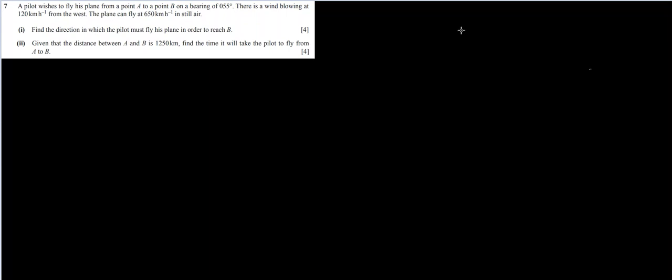So let's try to visualize what they are trying to say. 55 bearing will be somewhere say here. So this is A, this is B. This is bearing 55 degrees.